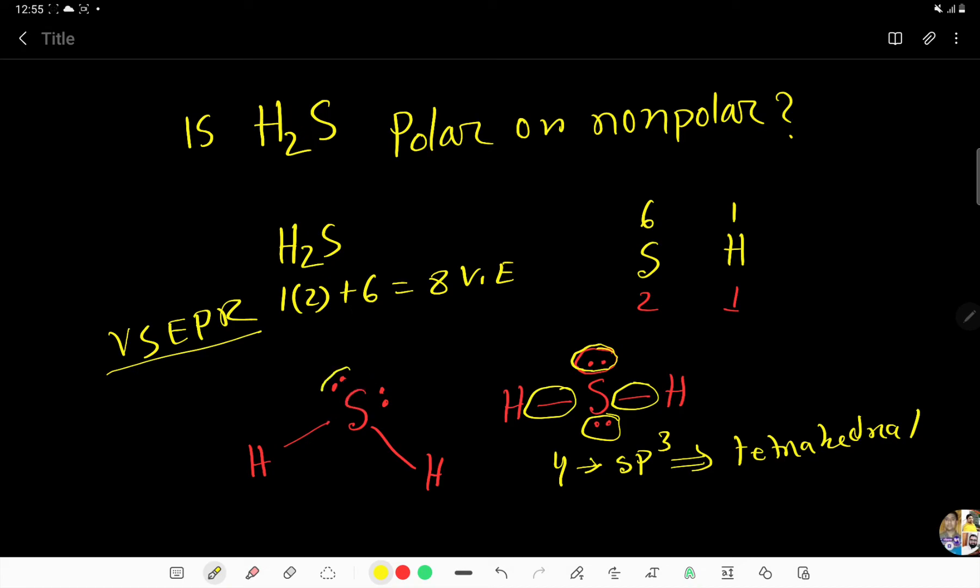Due to presence of 2 lone pairs over sulfur, they will repel this bond or this bond. That is why, the bond angle will be less than tetrahedral. That is, bond angle will be less than 109 degrees.